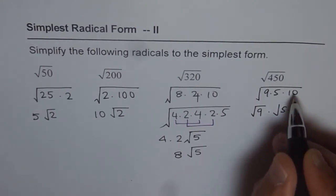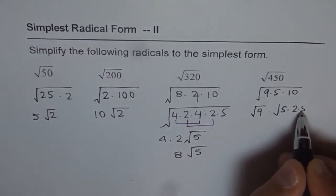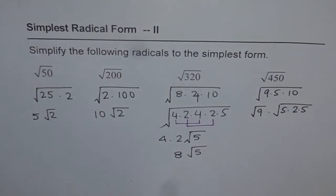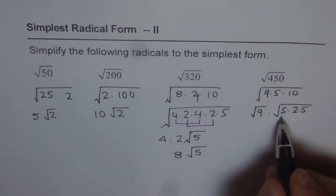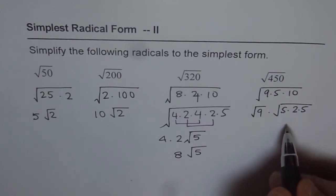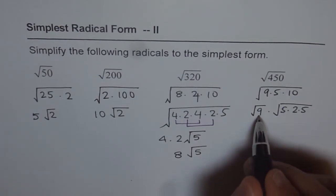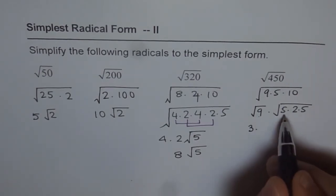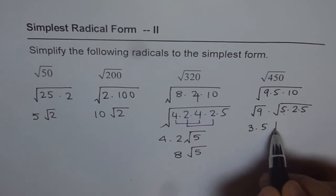Now, 5 times 10 could be written as 2 times 5. Do you see that? 2 times 5 is 10. Now, what do we have? We have 5 times 5 under the radical, which is 25 and square root of 25 is 5. We can factor that out. So we get 3 from here and we get 5 from there. Square root of 2.